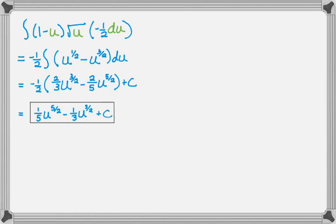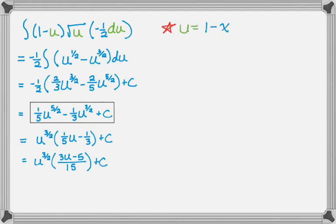But I look at that thing that I have there and I notice that I can factor it. So what I'm going to do is take out u to the 3 halves. And it'll leave me with this. Now I'm going to get a common denominator. So that gives me 3u minus 5 over 15. Now I'm going to remember that u is 1 minus x squared. And I'll substitute back in. So I end up with this.